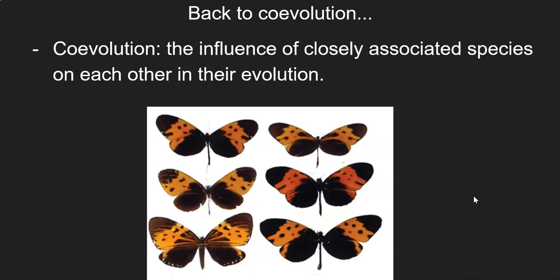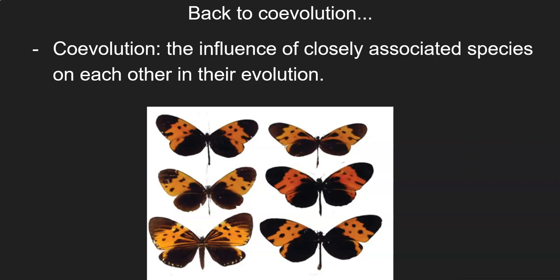So we've defined evolution as a change in a population over time. Co-evolution is the influence of closely associated species on each other in their evolution. A classic example is these Heliconius butterflies. They are not related to one another — these are all different species — but as you can see, they look quite similar. These organisms are driving one another's evolution.